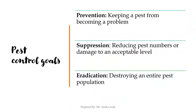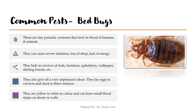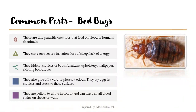The first common pest we look at is bed bugs. As you can see in the adjoining image, they are typically yellow to white in color and can leave a small blood stain on sheets or walls. They also give off a very unpleasant odor, which is how you can detect their presence. They lay eggs in crevices and stick to surfaces. They are tiny parasitic creatures that feed on the blood of humans and animals, causing severe irritation, loss of sleep and lack of energy, especially in children.